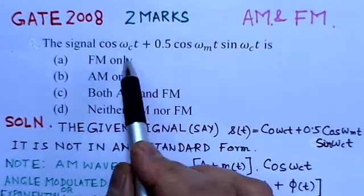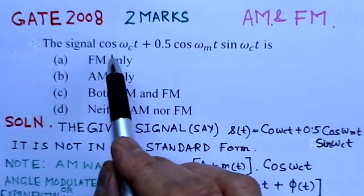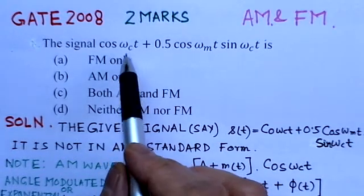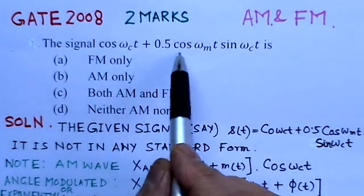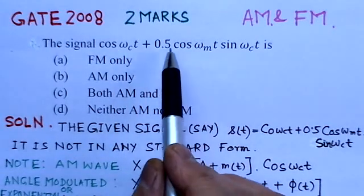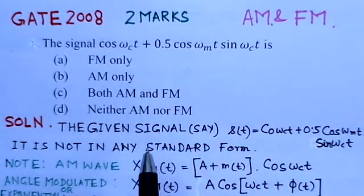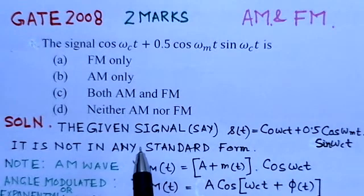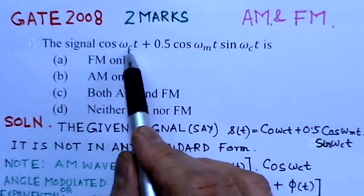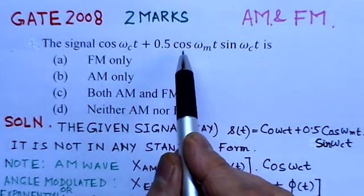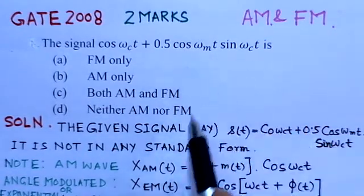Although this problem seems to be quite simple, it is a bit tricky. Here the waveform of the modulated signal is given, and we have to find what kind of modulation it is. The best thing to do is try to convert this equation into the standard form of modulated signal and then compare.